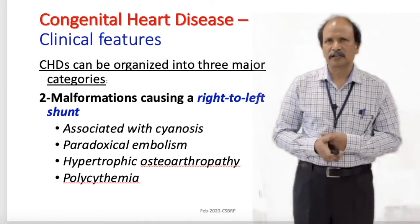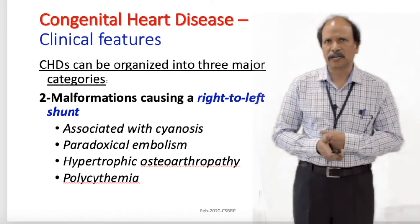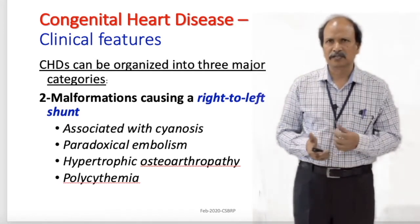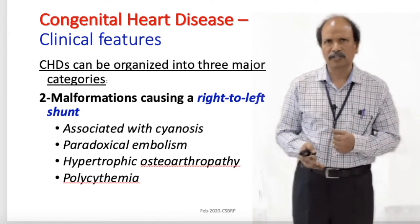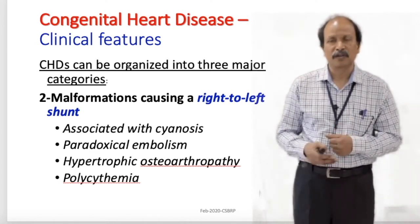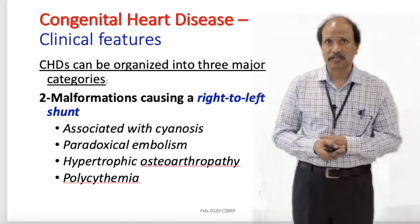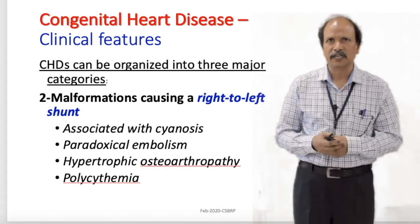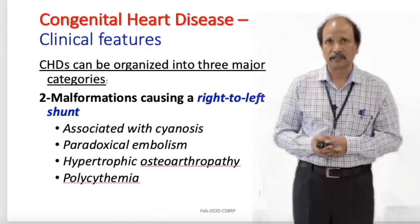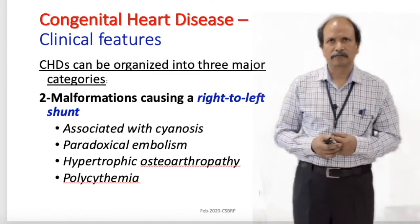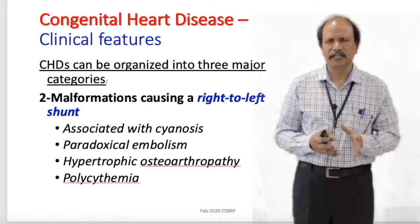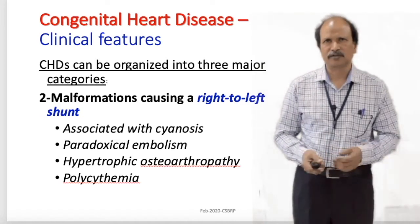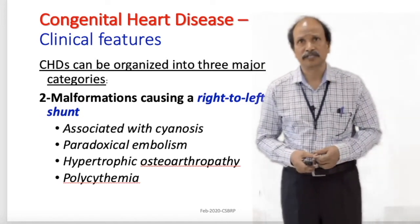Another important clinical implication of right to left shunt is paradoxical embolism. Normally, we would predict an embolus originating from the venous system to go into the pulmonary circulation. But in paradoxical embolism, instead of going into the pulmonary circulation, it enters into the systemic circulation. For this to occur, there should be some opening either in the atrial septum or in the interventricular septum.